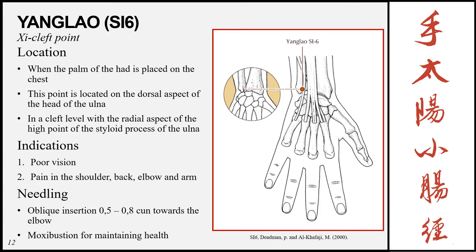Yanglao, Small Intestine 6, is the xi-cleft point. It is located on the dorsal aspect of the head of the ulna when the palm is placed on the chest — a cleft develops in this region which is palpable, and the point lies in that cleft. Indications include poor vision, and pain in the shoulder, back, elbow, and arm. Insertion is oblique 0.5–0.8 cun towards the elbow, or moxibustion can be used as it is a good point for maintaining health, similar to Stomach 36.